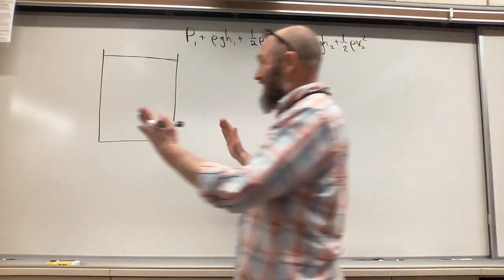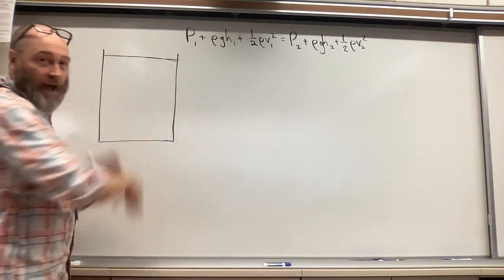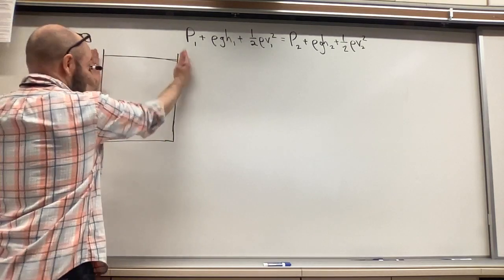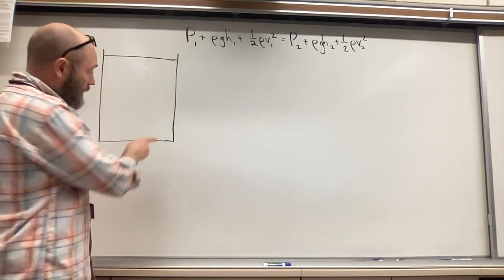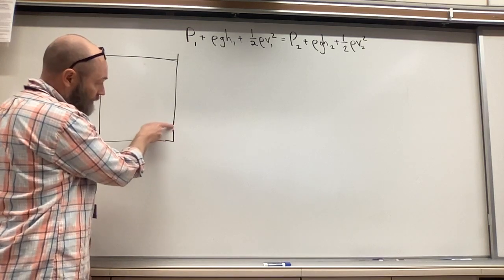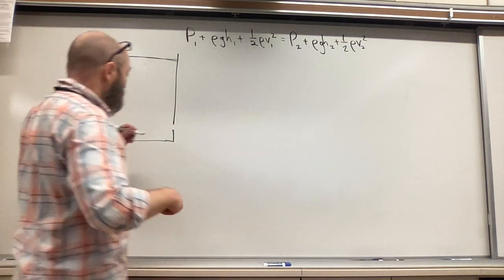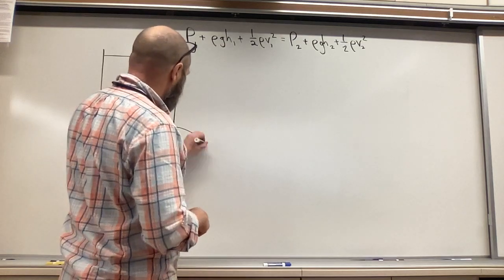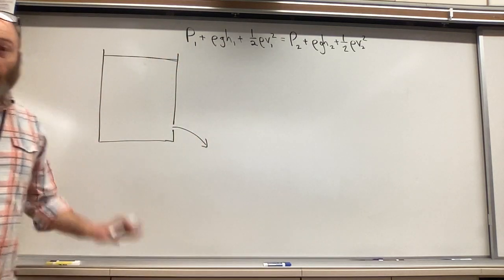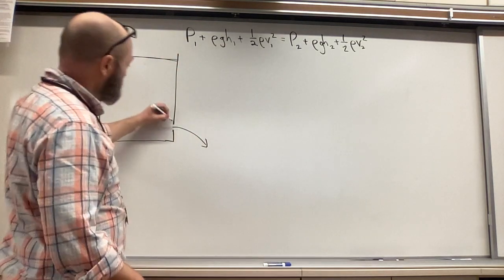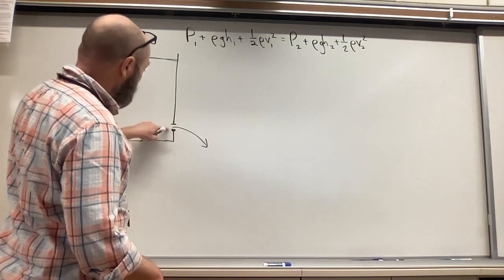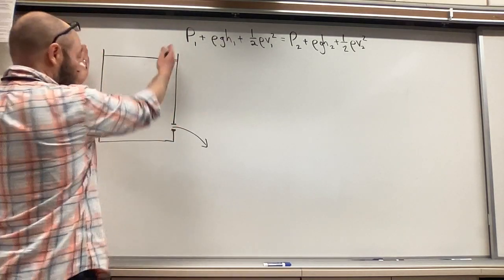So imagine that I have this really giant vat of water, super duper wide, and my giant vat of water has a teeny tiny hole at the bottom. So that means the water is going to come out of here. This hole is teeny tiny compared to the top.